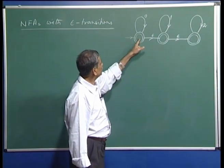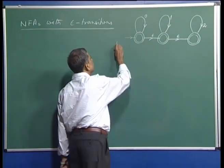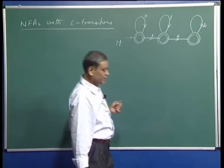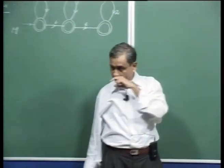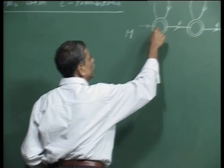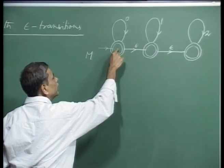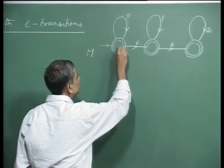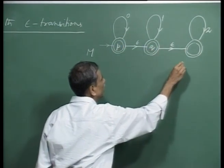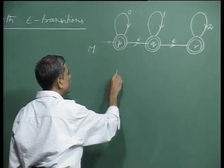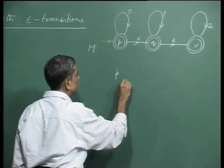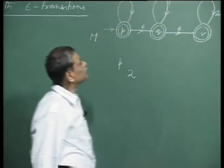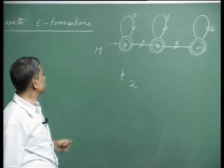First, notice that there are three states in this machine M and all three states are final states, and yet, as we will see, it is not the case that this automaton accepts all strings. For example, the automaton is in a state and from that state it can take an epsilon transition to another state. Let me name these states as P, Q, and R. The alphabet that the machine uses is 0, 1, and 2.